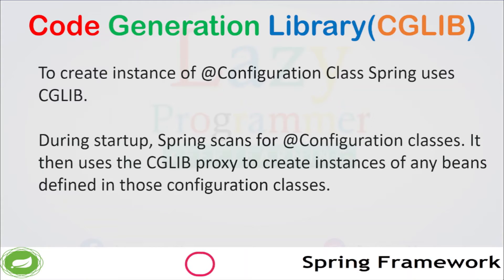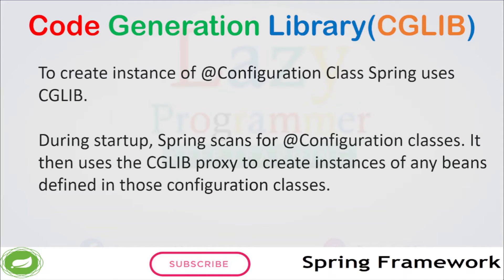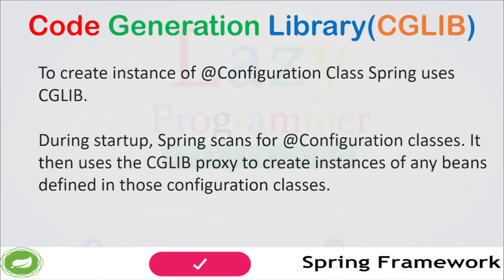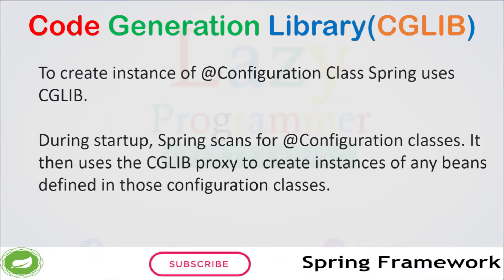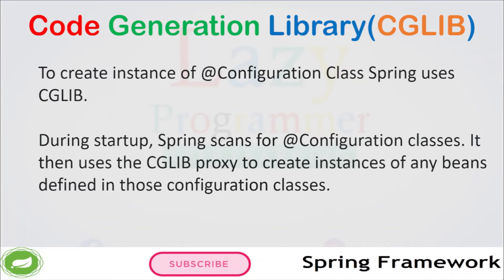A proxy is nothing but an intermediate class. Whenever you try to call a method, the control first goes to the proxy class where some checks can be defined. After those checks, the proxy then calls the actual target method. That is the basic mechanism behind this — we will see how CGLib proxy actually works in the next few slides.